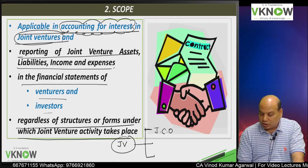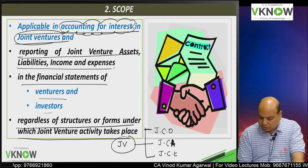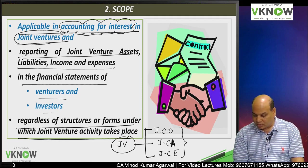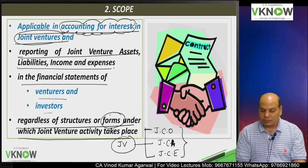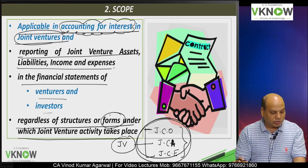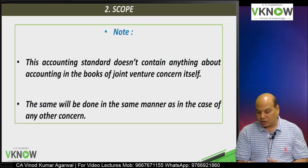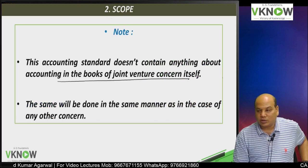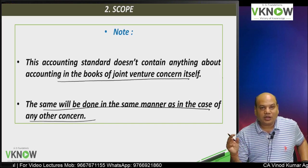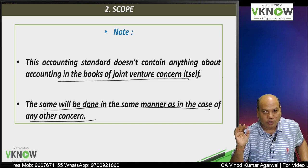The three forms of joint venture are: jointly controlled operation (JCO), jointly controlled asset (JCA), and jointly controlled entity (JCE). AS 27 is applicable to all forms of joint venture — whether JCO, JCA, or JCE. This standard does not deal with accounting treatment in the books of the joint venture concern itself. Accounting of the joint venture entity will be done like any other entity; there is no specific standard to be followed by the new joint venture company. They will follow all other standards.